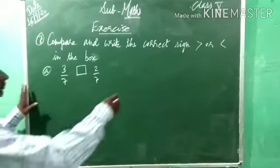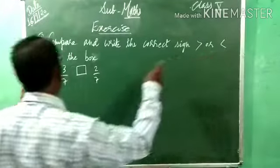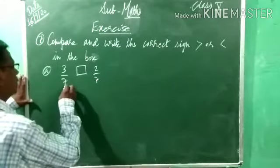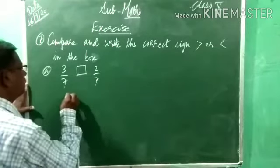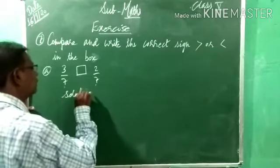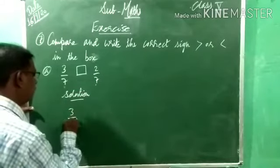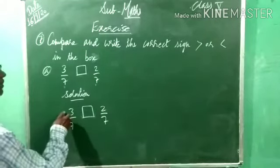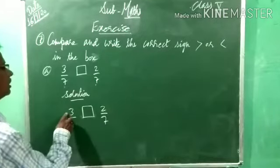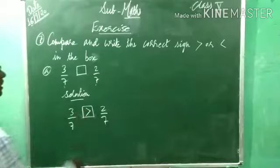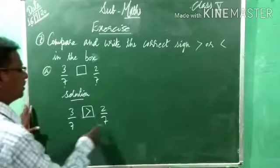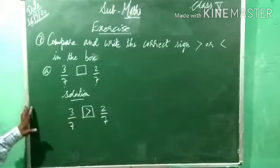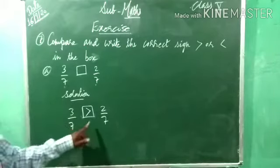Compare and write the correct sign — greater than or less than. Given fractions: 3 by 7 and 2 by 7. In both fractions the denominator is the same. So we observe the numerator: 3 is greater than 2. Therefore 3 by 7 is greater than 2 by 7.